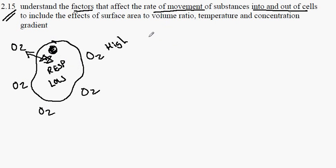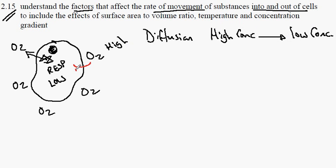So the rule of diffusion tells us that the molecule will move from a region of its high concentration to a region of its low concentration. So the prediction here is that the oxygen molecules will move into the cell.